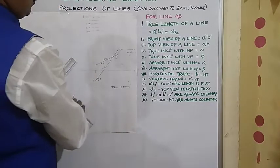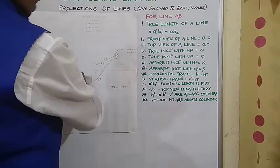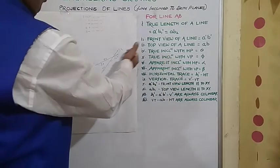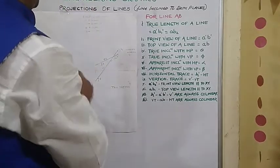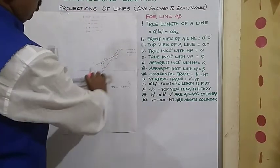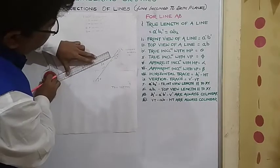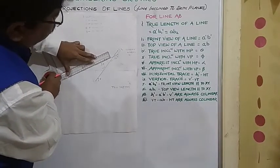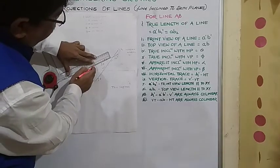Then the traces part as I explained in my previous video. Traces are nothing but the extension of front view and top view towards XY. So A dash B dash, this is the front view line, it is to be extended towards XY. So I have extended this.